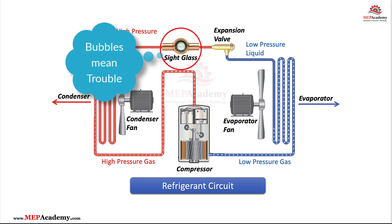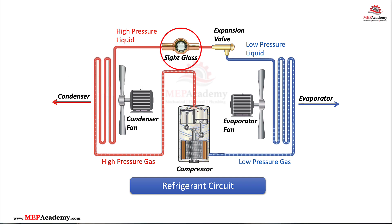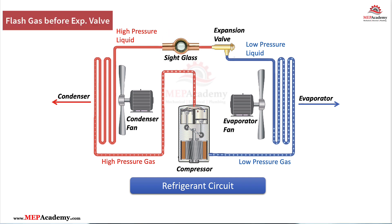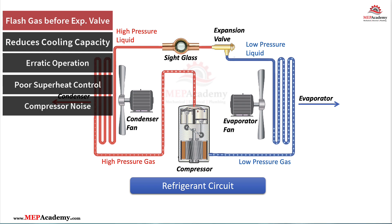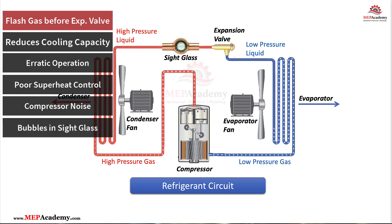Bubbles mean trouble. In the evaporator, flash gas is expected — it's part of the process. But in the liquid line, it's a big issue. Flash gas before the metering device reduces cooling capacity and causes erratic operation. You'll see the following symptoms: poor superheat control, compressor noise, and bubbles in the sight glass.